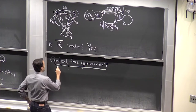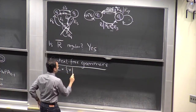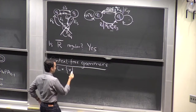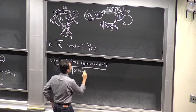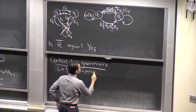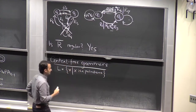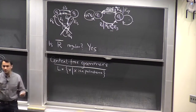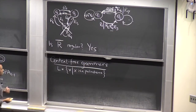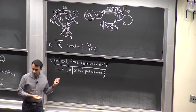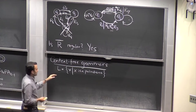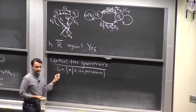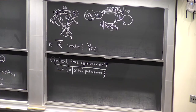Let's start with the language of all strings x such that x is a palindrome. A palindrome is a string that's the same when you reverse it. This language is not regular — there's no DFA that accepts this language. You can show this using the pumping lemma for regular languages.